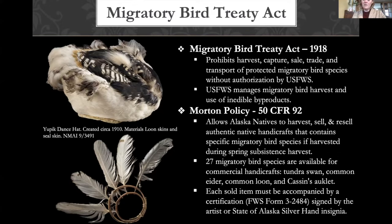Once you have the materials and plan to commercially sell Native art, you also need a form for each sold item made utilizing one of those 27 migratory bird species. It must be accompanied by a certification, obtained from U.S. Fish and Wildlife Service, signed by the artist or accompanied by a state of Alaska Silver Hand insignia, providing details on the species utilized. It must be very specific to a rural resident harvesting during subsistence.